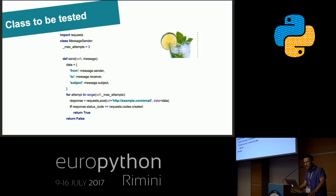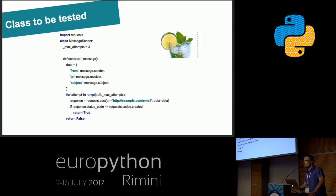This data is being sent in a few attempts using the post method from the requests library. Three attempts are made. Depending on the result from the post method, the send method will return true or false.